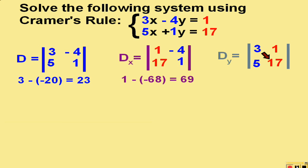And finally, three times seventeen is fifty-one, minus one times five, which is five, and fifty-one minus five is forty-six.